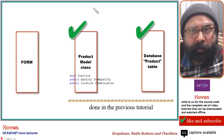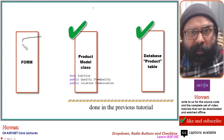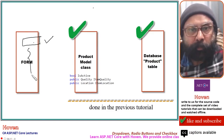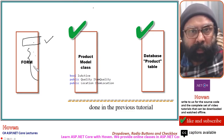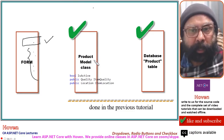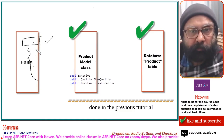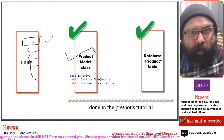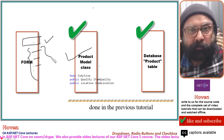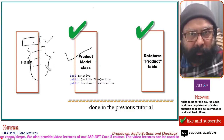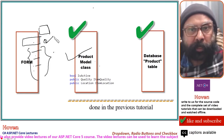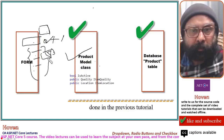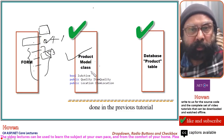We started with the objective of modifying our form. Initially we had just one input text, but in the previous tutorial we decided to add more form elements. For each form element, we will have to add properties to our product model class. We decided our form will contain three more additional form elements: one for a checkbox, one for a radio button list, and one for the drop-down. For each of these input elements, we have added three properties to the product model class in the previous tutorial.